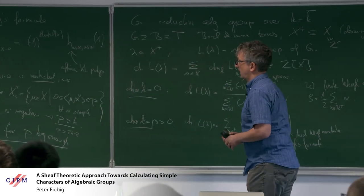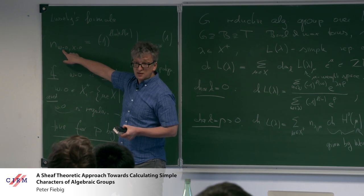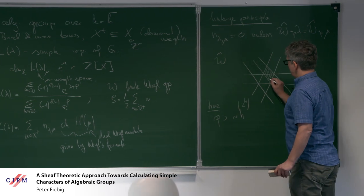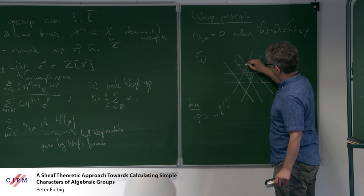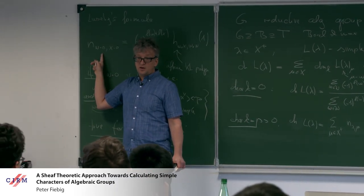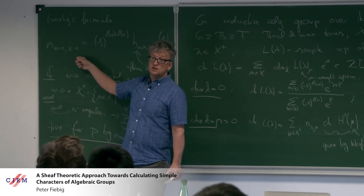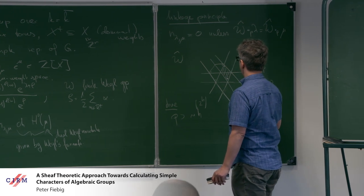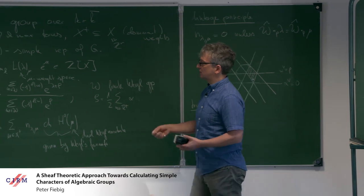A question from the audience: what is the zero here — w times zero? That's the zero weight, so w·0 is the rho-shifted dot action. Zero is the lowest weight in the fundamental alcove, and using translation functors it's actually enough to know what these numbers are for the orbit of zero — you can replace zero by any weight in the fundamental alcove. For p bigger than the Coxeter number, there's Steinberg's tensor product formula, so these restricted weights are sufficient.